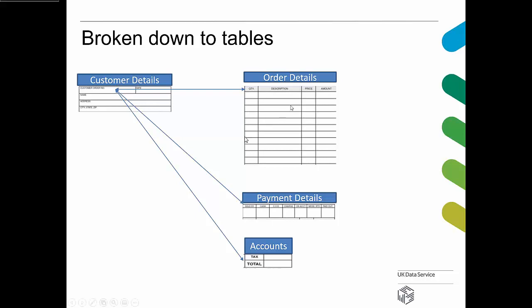Each table has its own uses for different departments or purposes. If you just want to send someone a new catalogue, you only need the customer details table. If you're only interested in reordering stock, you just need the order details table. By splitting the data up into separate tables, you can limit how much data you need to process to get the information you need. That's one of the key design elements of relational databases — you only store data once.